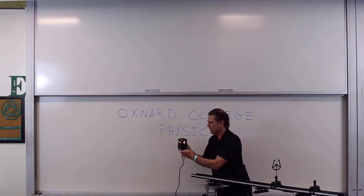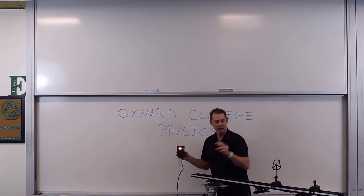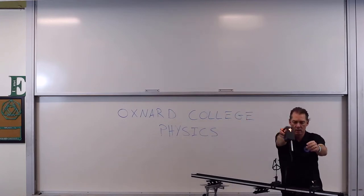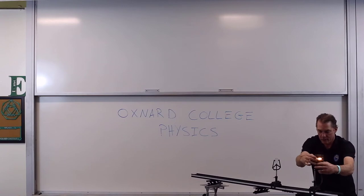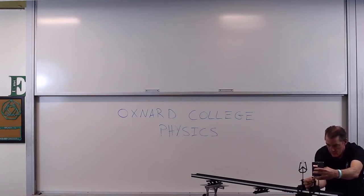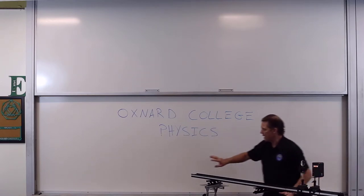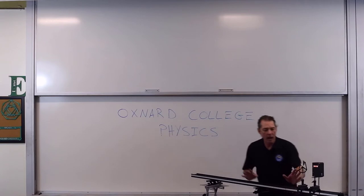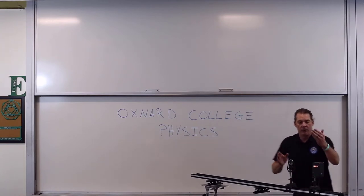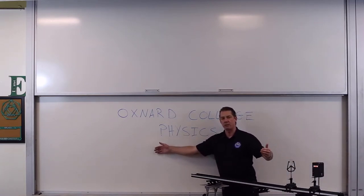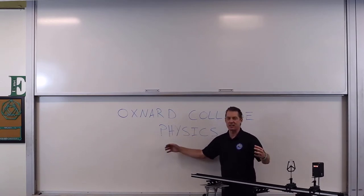What we want to do is look at the image produced by passing the light from this object through a converging lens and see specifically what's going on. I'm going to set it back on this optical bench and get this aligned. Based on where this is and where the screen is — the distance from the object to the lens is the object distance P, and the distance from the lens to where the image is produced is the image distance Q.